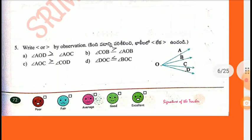Fifth one: Write by observations. A: Angle AOD is greater than Angle AOC. B: Angle COB is greater than Angle AOB. C: Angle AOC is greater than Angle COD. D: Angle DOC is less than Angle BOC.